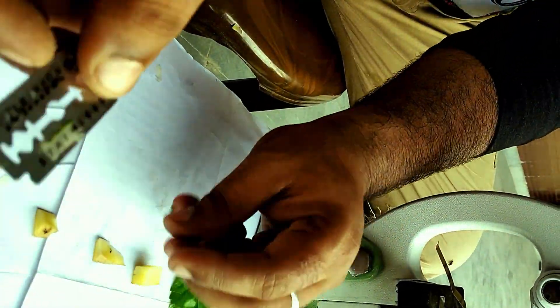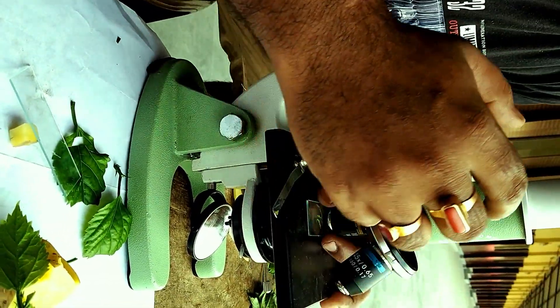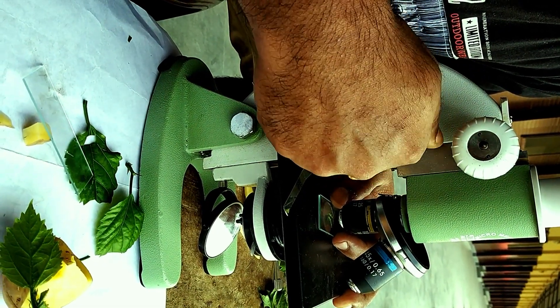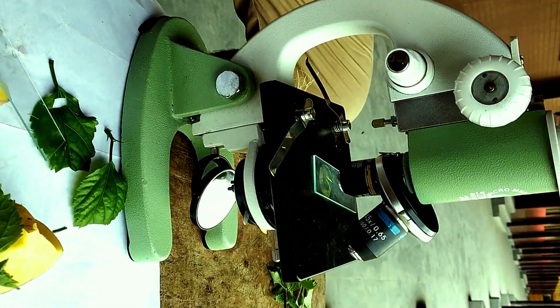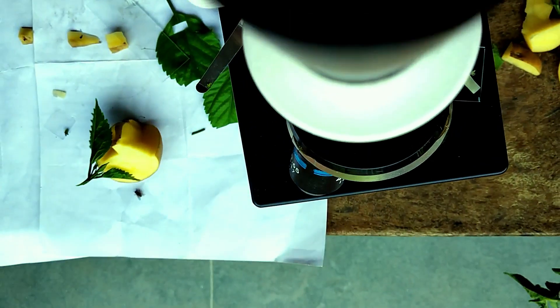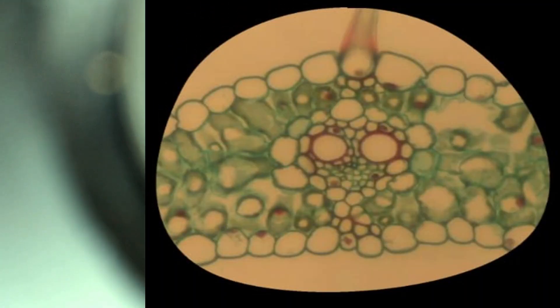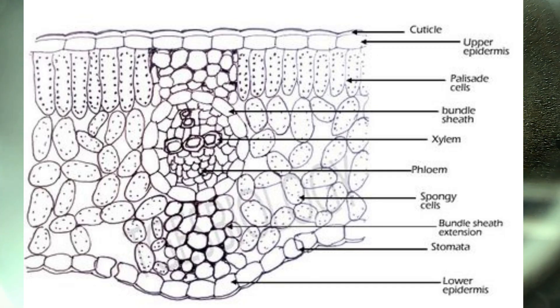If you want to take more sections, then you can. After this, you need to place it under the slide. If everything goes fine, you can see it. I am going to look under the microscope — this is my microscope. I hope you can see the xylem in the phloem and all.